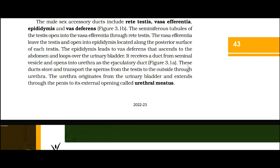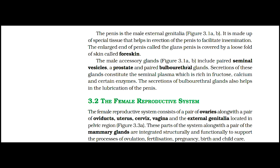The urethra originates from the urinary bladder and extends through the penis to its external opening called the urethral meatus. The penis is the male external genitalia, as given in figure 3.1a and 3.1b. It is made up of special tissue that helps in erection of the penis to facilitate insemination. The enlarged end of the penis called the glans penis is covered by a loose fold of skin called foreskin. The male accessory glands include paired seminal vesicles, a prostate, and paired bulbourethral glands. Secretions of these glands constitute the seminal plasma, which is rich in fructose, calcium, and certain enzymes. The secretion of bulbourethral glands also helps in lubrication of the penis.